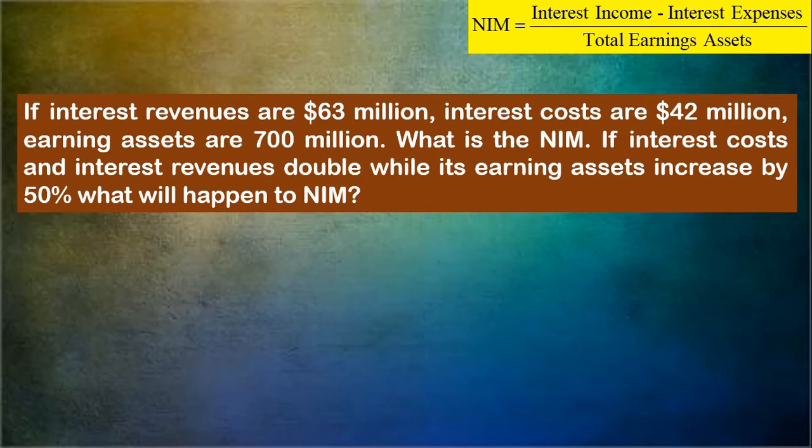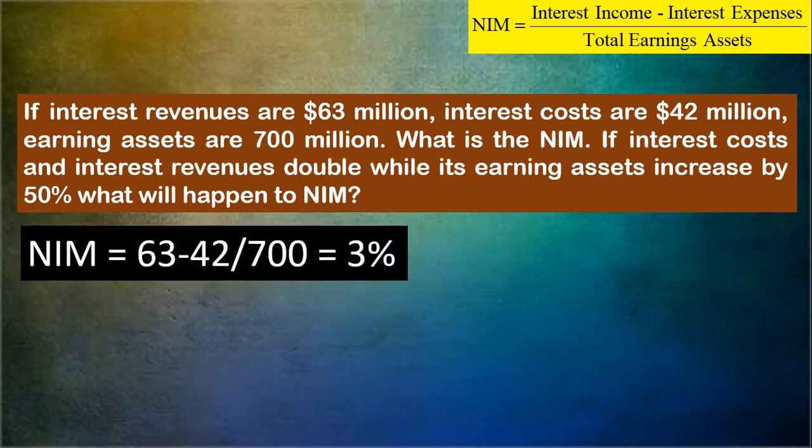Let's do the first part. NIM equals interest income minus interest expense, divided by total earning assets. Here the interest income is 63 million and interest expenses are 42 million, divided by 700 million in earning assets. The result is 3 percent net interest margin.